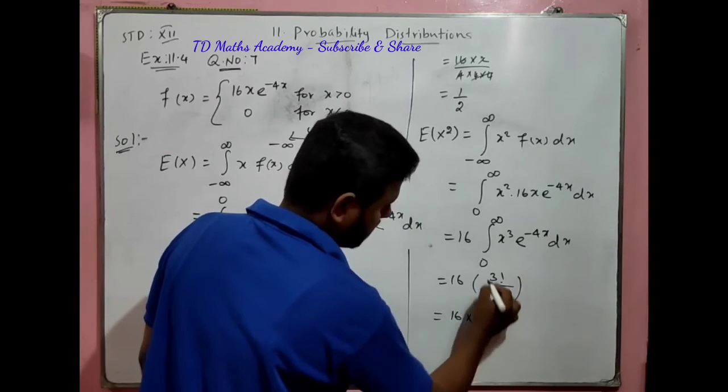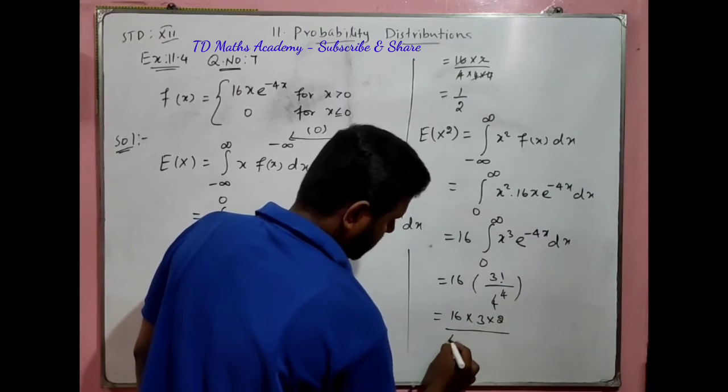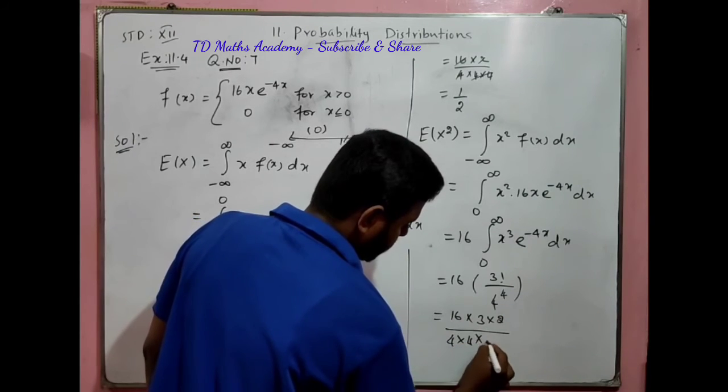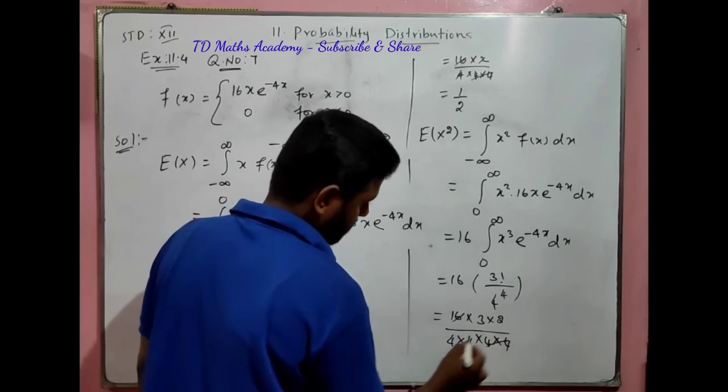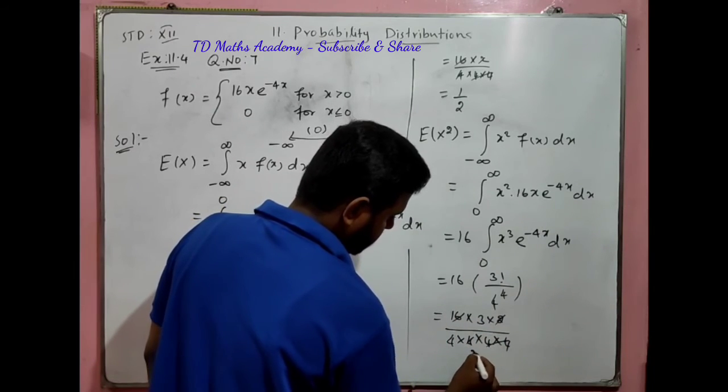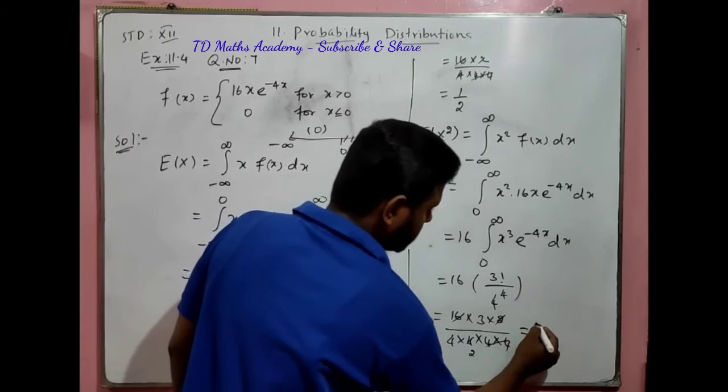16 times 3 factorial (3 times 2 times 1) divided by 4^4 (4 times 4 times 4 times 4). The 16s cancel, the twos cancel, leaving numerator 3 over denominator 8. So E(x²) equals 3/8.